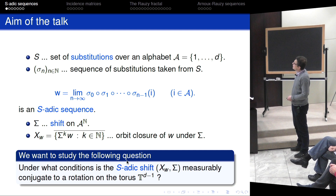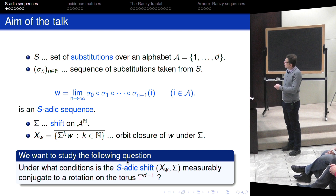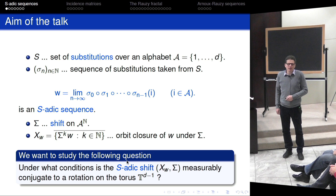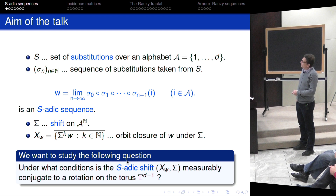My talk is on S-adic sequences and Rauzy fractals. Let S be a set of substitutions — a finite set, though it doesn't really matter — where all substitutions are defined over the same alphabet. We build a sequence of substitutions taken from this set S, and I'm interested in words that can be written as such a limit: you take one letter, iterate the substitutions on it, and if the limit exists, we call this an S-adic sequence.